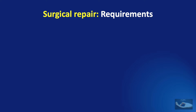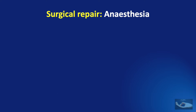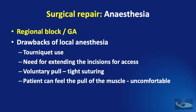Before going ahead with the surgery, we need to remember that all five basic requirements for any basic hand surgery are needed: good anesthesia, good lighting, good magnification, good tourniquet, and a good technique. For extensor tendon repair, a regional block is preferred in adults and general anesthesia in children. Local anesthesia has certain drawbacks — it is not possible to use the tourniquet for a prolonged period, incisions need to be extended, voluntary muscle pull by the patient may make suturing very difficult, and the patient can feel discomfort from the muscle pull while suturing.